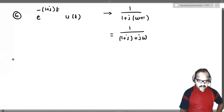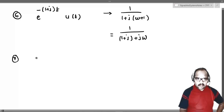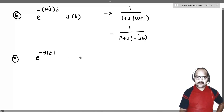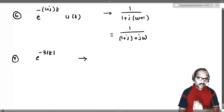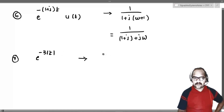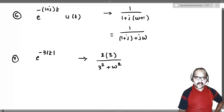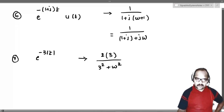Seventh example: e power minus 3 mod t. What is the Fourier transform of this signal? It looks like e power minus a mod t, so the Fourier transform is 2a divided by a squared plus omega squared, which gives 6 by 9 plus omega squared.